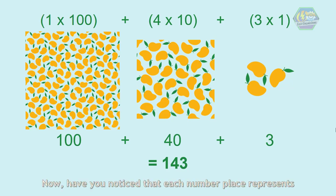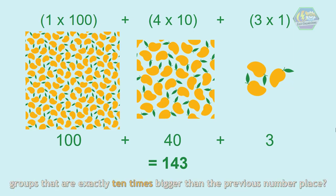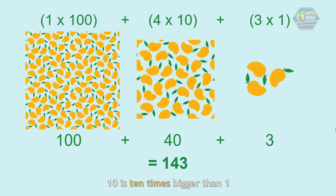Now have you noticed that each number place represents groups that are exactly 10 times bigger than the previous place? 10 is 10 times bigger than 1, and 100 is 10 times bigger than 10, right?